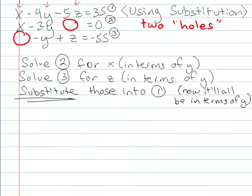So if we take a look at number two, we have x minus three y equals zero. So I want to get x on one side, so I'll add three y to both sides, and I've got x equals three y.